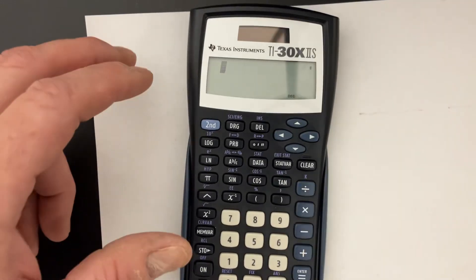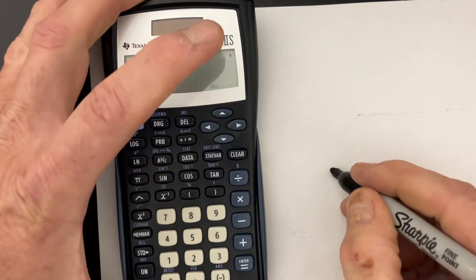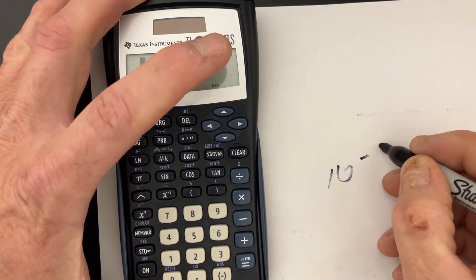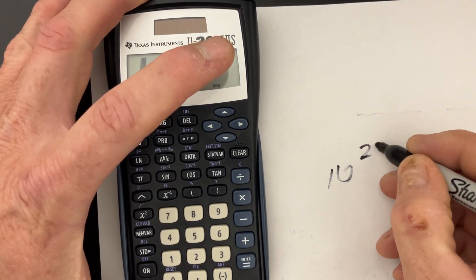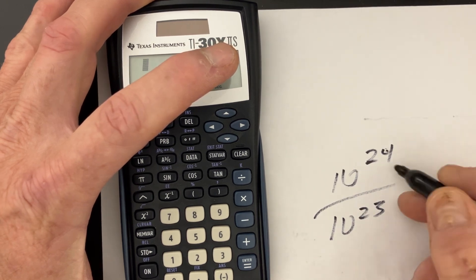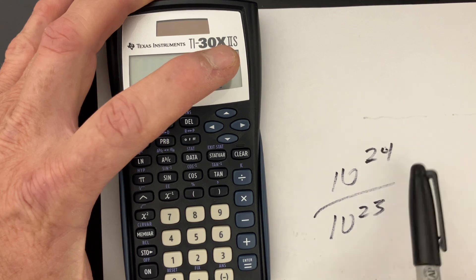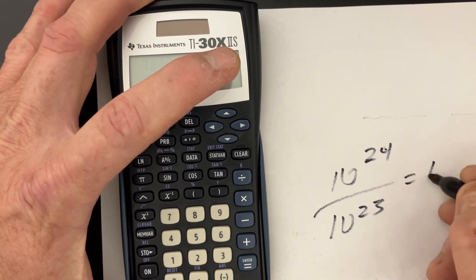We had a problem on the last video where we had 10 to the 24th over 10 to the 23rd. And we had said you can simplify by just subtracting 23 from 24, and you end up with equals to just 10.